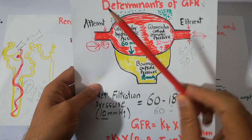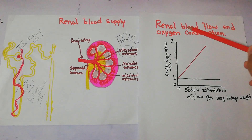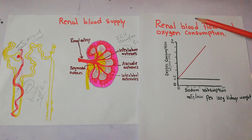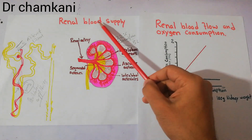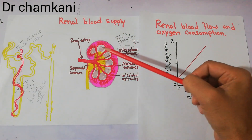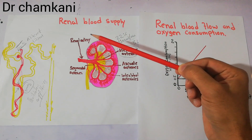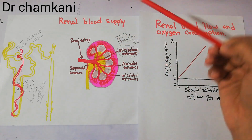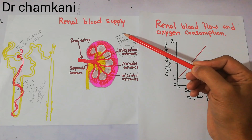For a proper filtration process, the blood flow to the kidneys is very important. Similarly, oxygen consumption in the process of filtration and reabsorption — especially the reabsorption of sodium — is also very important. As discussed in the renal blood supply, different arteries supply blood to the kidneys. The blood flow to the kidneys is about 22% of the total cardiac output.